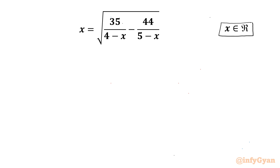Let's get started by writing x cannot be equal to 4 and 5, since denominators cannot be 0.